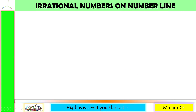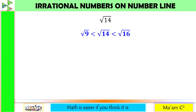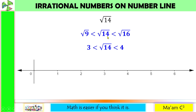Now let us plot irrational numbers on a number line. Recalling our earlier example, square root of 14 is less than the square root of 16 but greater than the square root of 9, or square root of 14 is less than 4 but greater than 3. Since 14 is closer to 16 than to 9, then square root of 14 is closer to 4 than to 3. Here is 3 and here is 4.